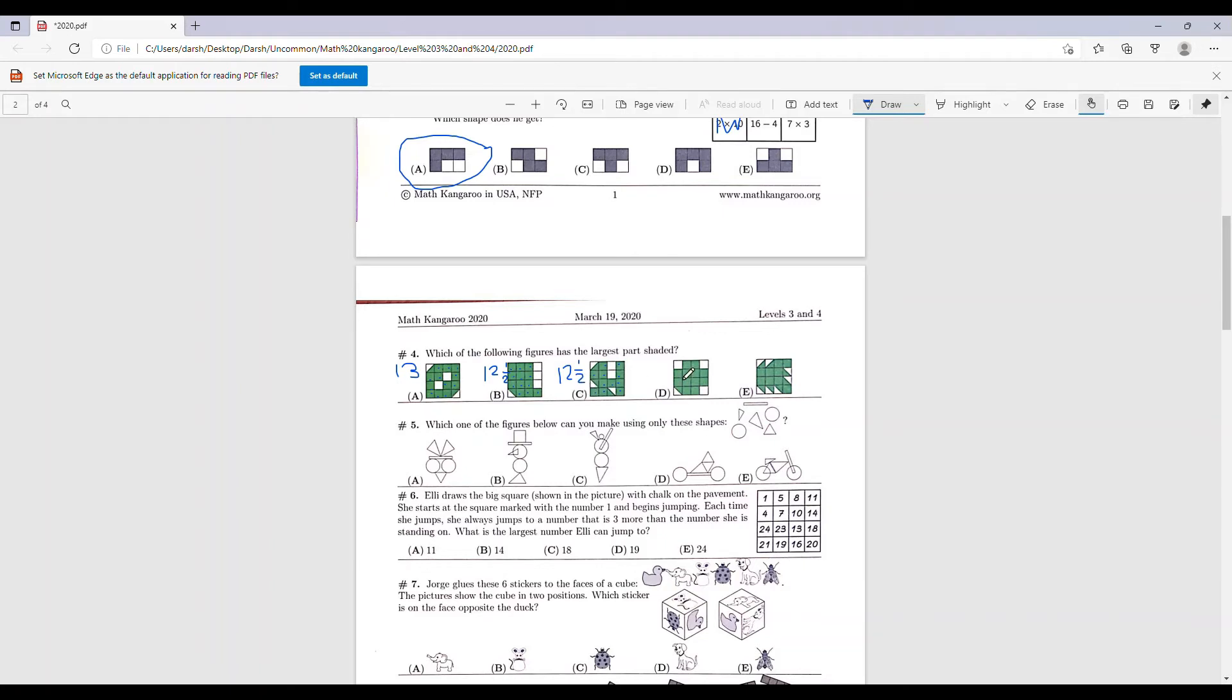Now let's count D: 1, 2, 3, 4, 5, 6, 7, 8, 9, 10, 11, 12. This one also has 12 and a half.